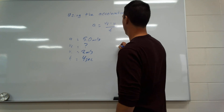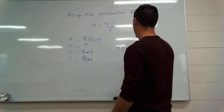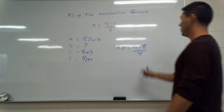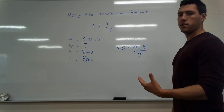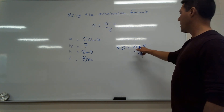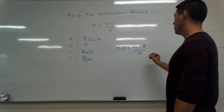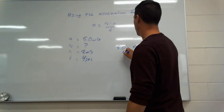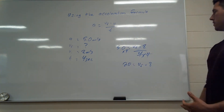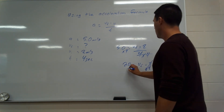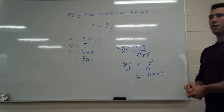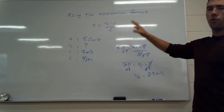Plugging in: 5 equals vf minus 8, over 4. First, multiply both sides by 4 to clear the denominator: 5 times 4 equals 20, so 20 equals vf minus 8. Then add 8 to both sides: vf equals 28 meters per second.